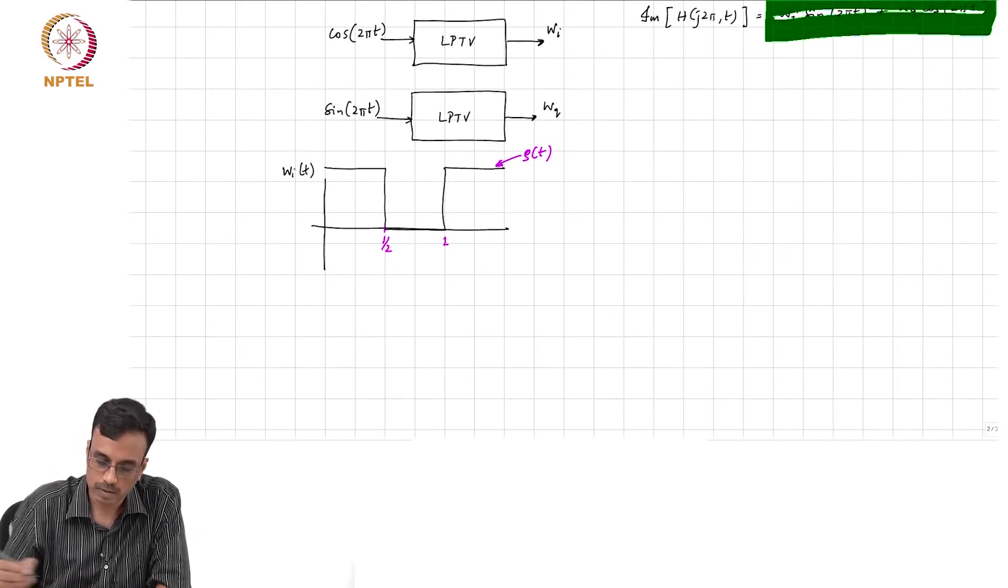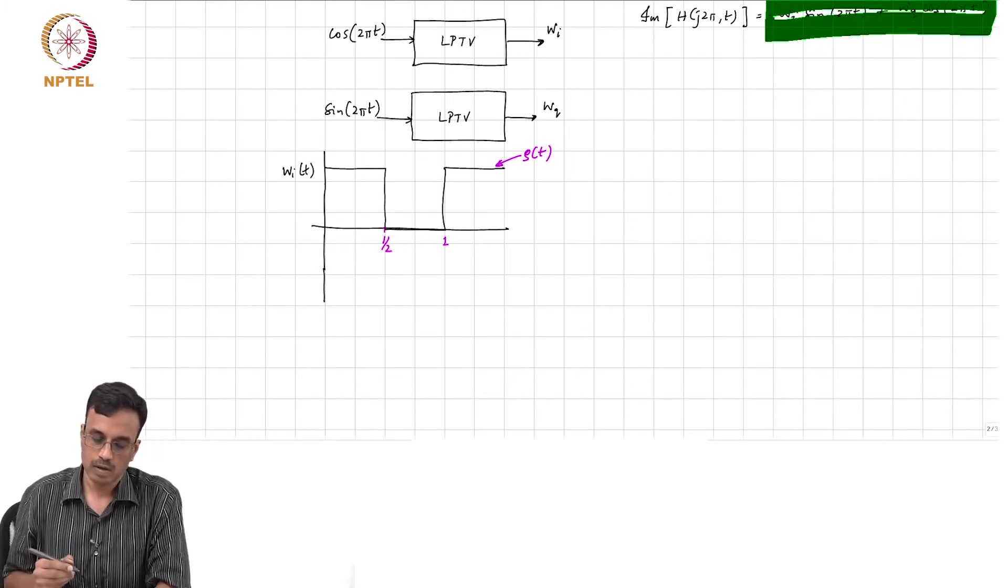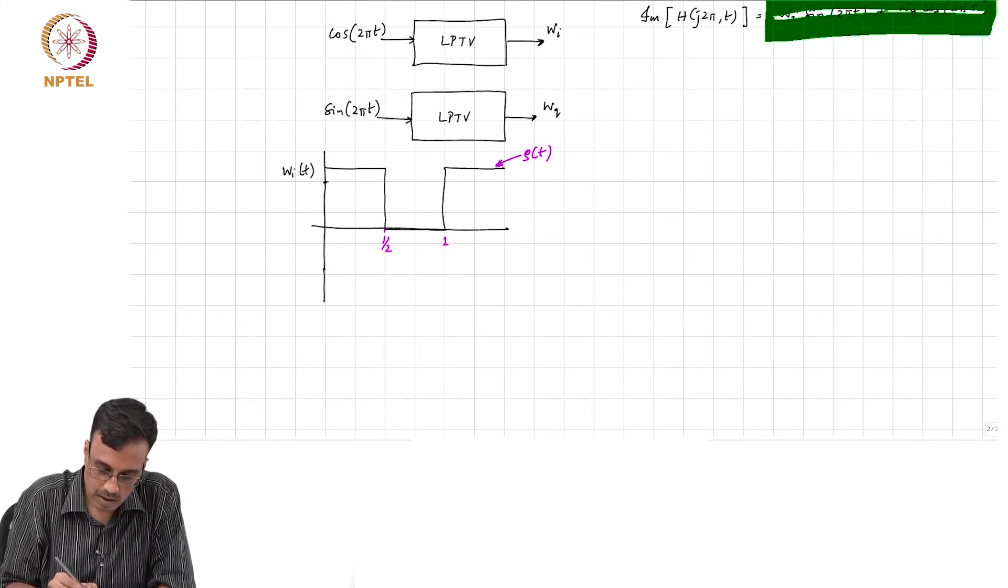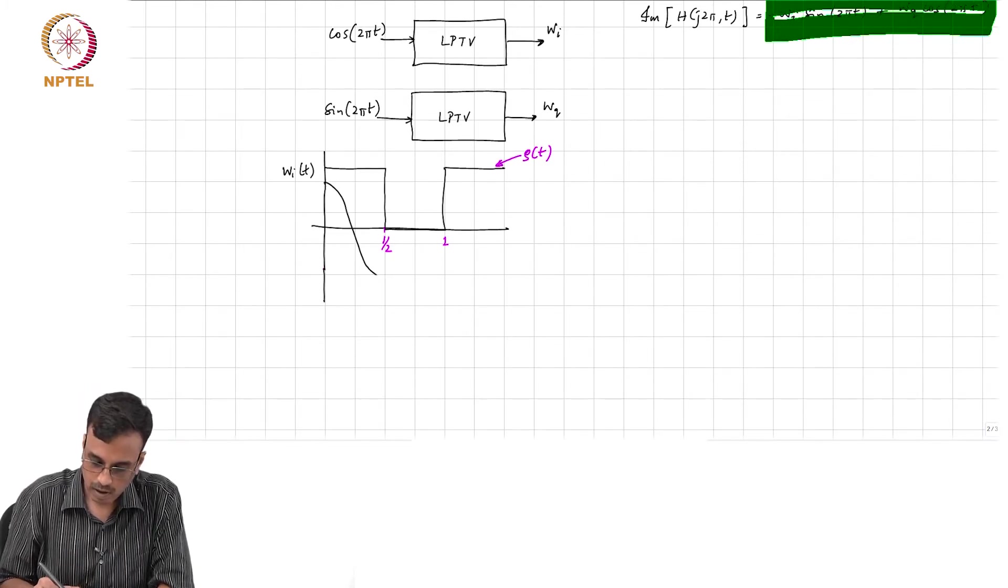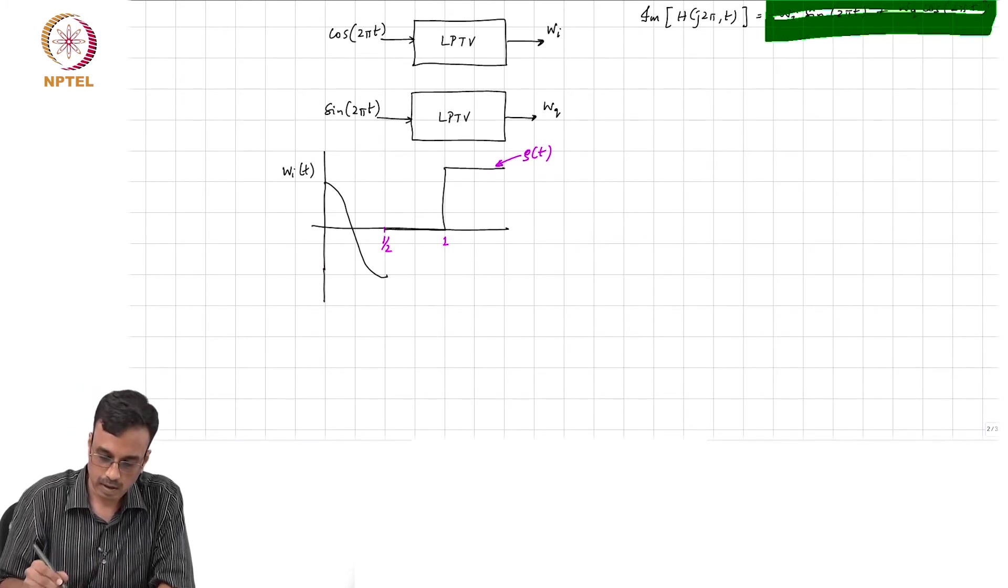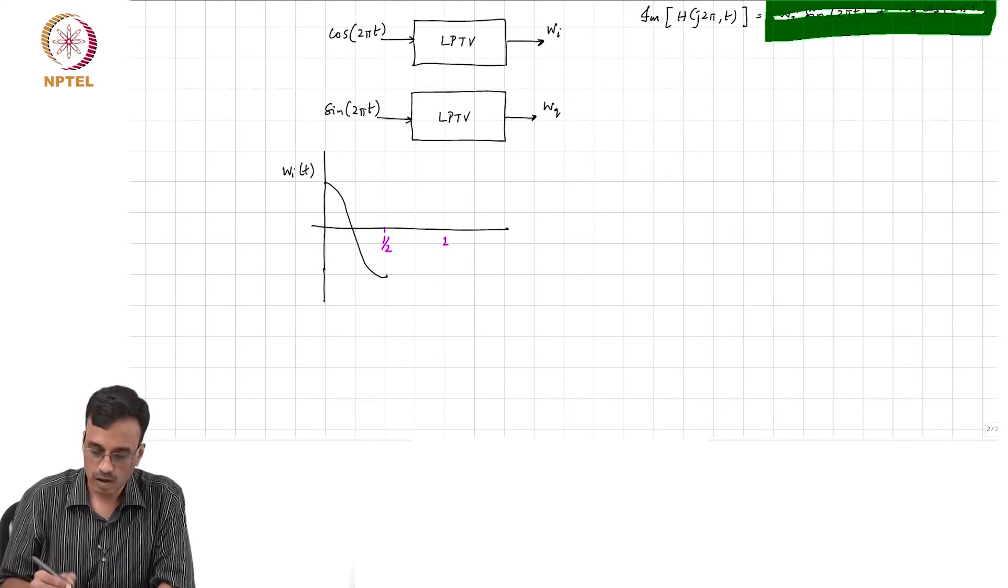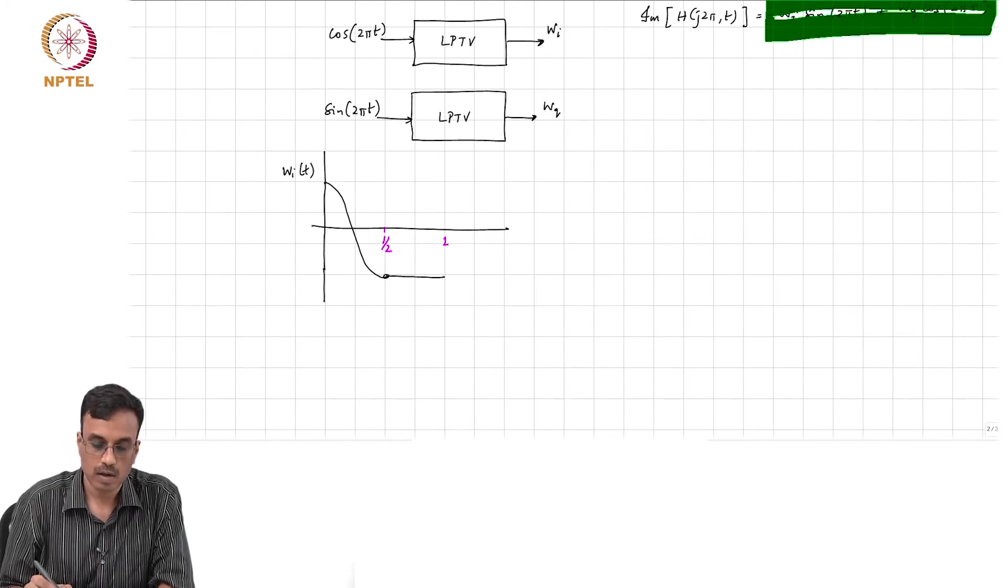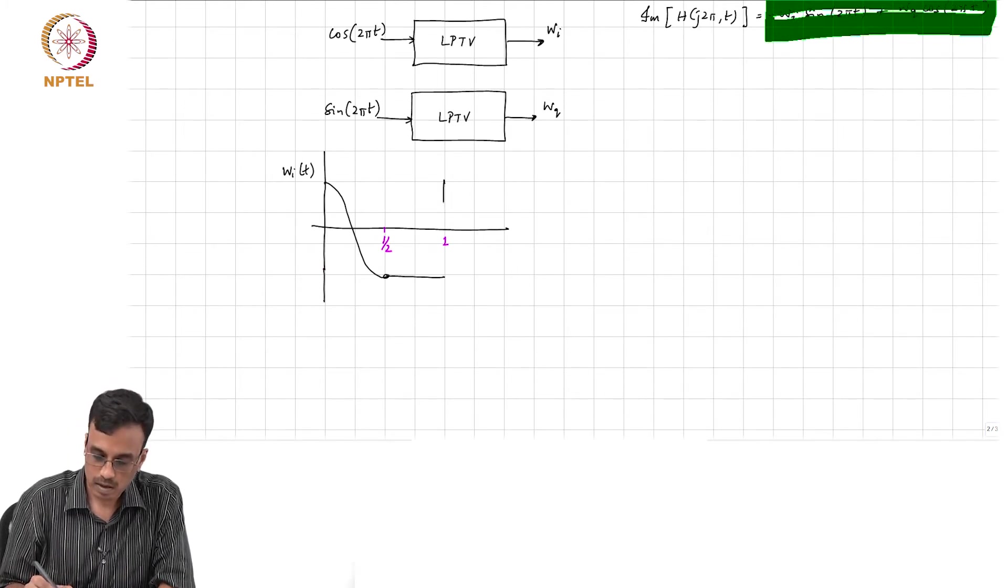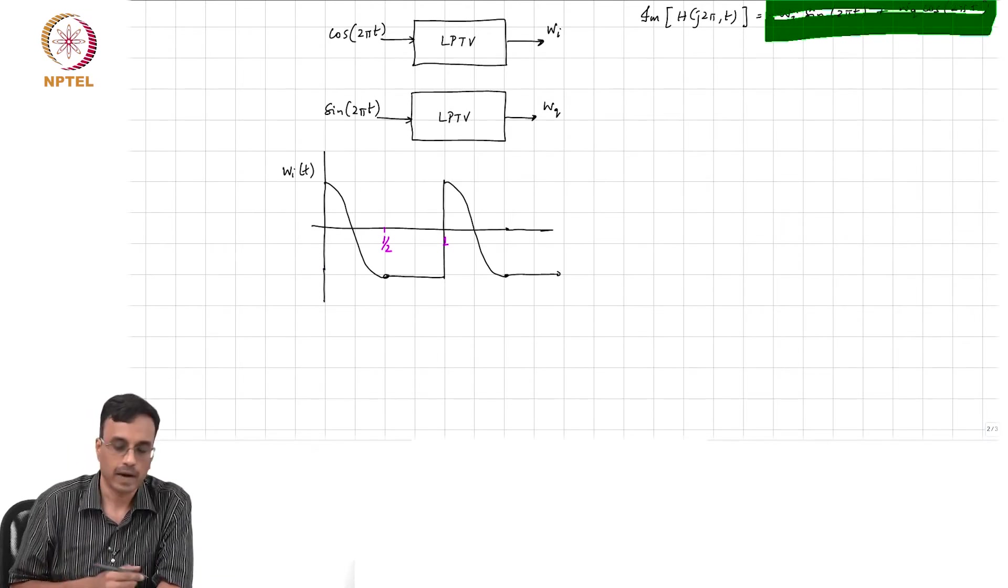Can you please help me plot wᵢ of t? It follows the cos 2πt. Very good. So basically it starts here, it follows - you have to assume that this is a cosine, alright. I want to get rid of this to reduce clutter. And then what happens? Then here the capacitor, the switch is open, remains flat. Then what happens again? This remains flat and so on, correct?